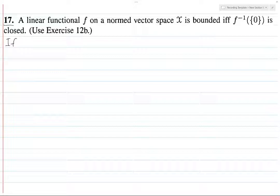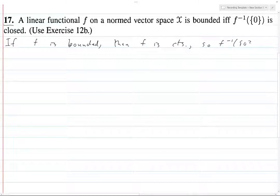If f is bounded, then f is continuous, so f inverse 0 is closed, because it's the inverse image under a continuous map of a closed set.